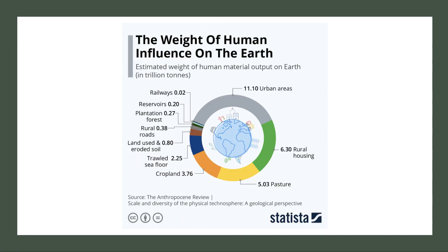Research shows that material output from human enterprise accounts for something like 30 trillion tons of weight, with urban areas accounting for the biggest share at 11 trillion tons, plus trawled sea floors, eroded soil, reservoirs and manufactured landscapes created by our production of goods and services. Even intangible services have a cost — consider the carbon cost of bitcoin mining, for example. The sheer physical weight of material output is staggering, and there is a big question about whether we need a seismic shift away from a consumer-led, materialistic society.